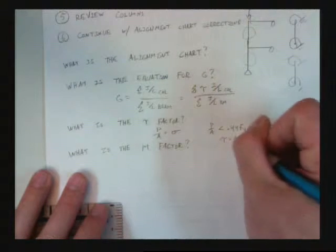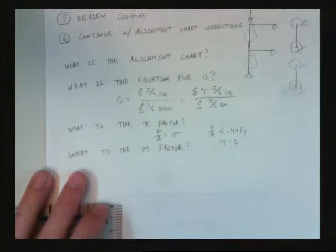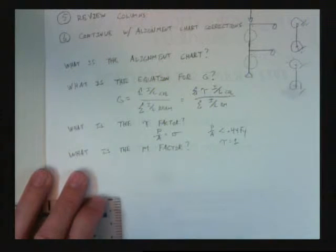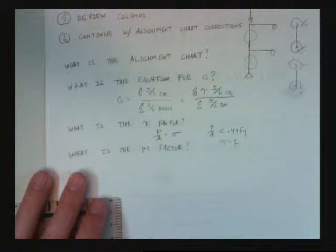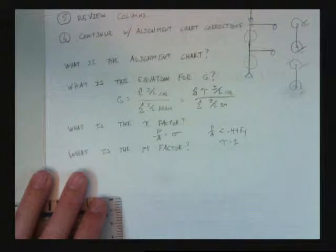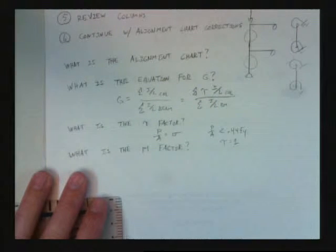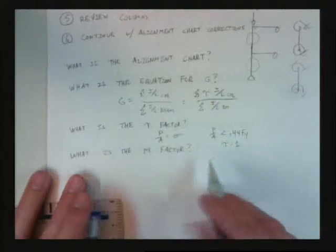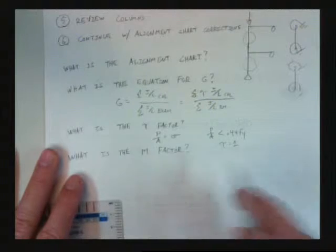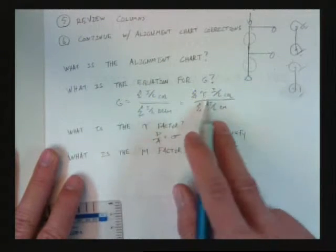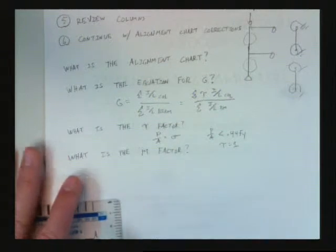Actually happens when P over A is less than 0.44 times FY. Tau is equal to one. When it's greater than 0.44, it's less than one. And how do we find it? In the steel manual. Table 4.21 of the steel manual. Okay. Awesome. So, it goes up there. That's right. So, it reduces the column.